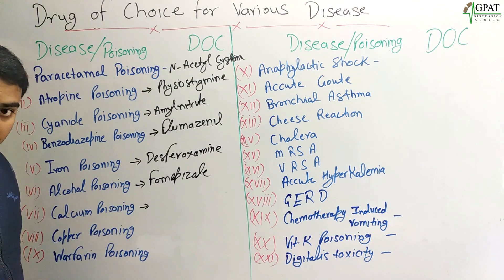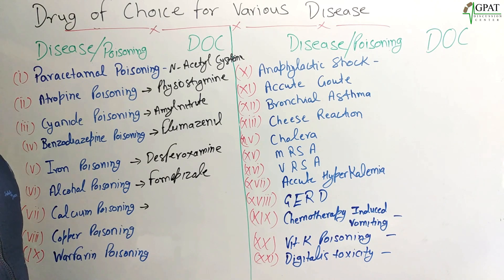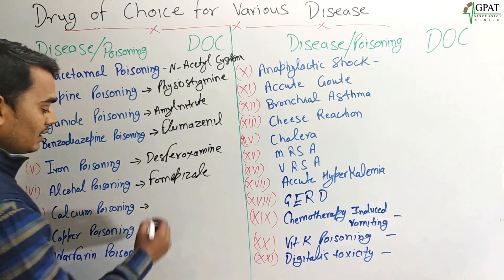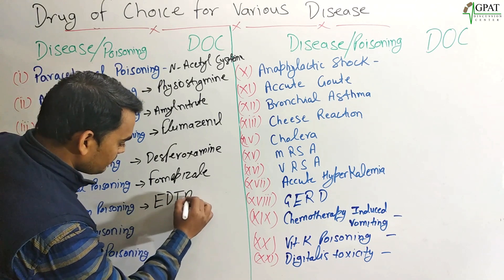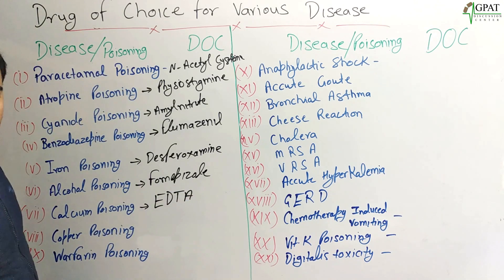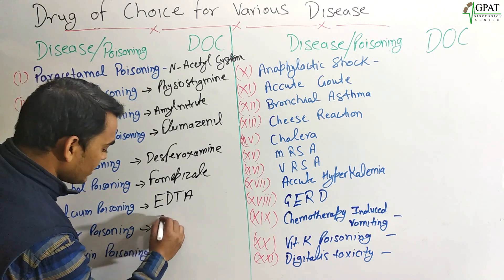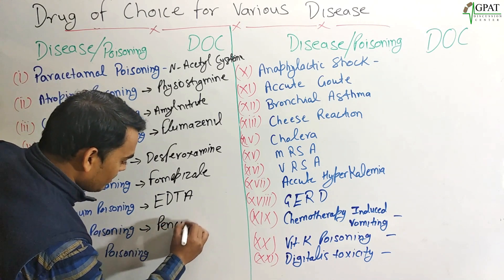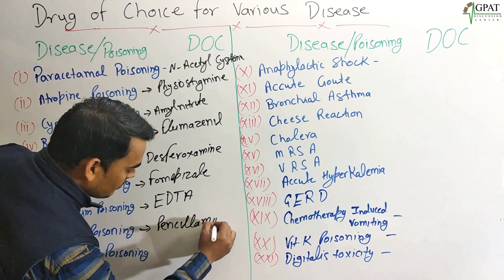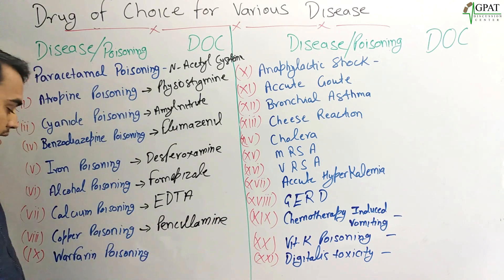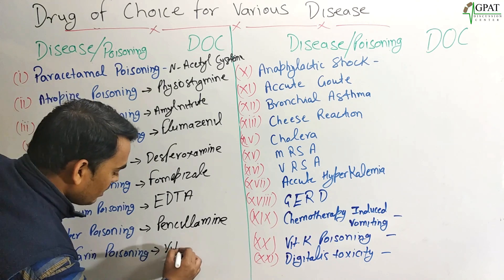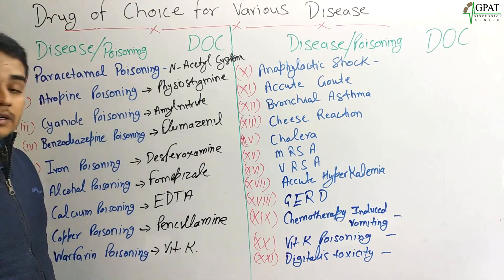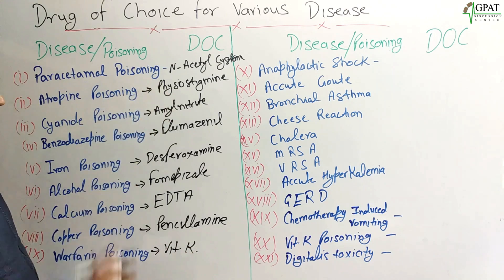Next: Calcium poisoning. Since calcium is a metal, to reduce its concentration in your serum you need a chelating agent. For calcium, this will be EDTA. Next: Copper poisoning. For copper poisoning, the drug of choice is Penicillamine.